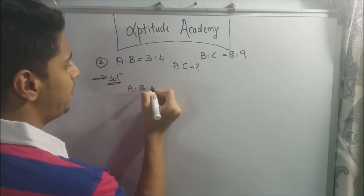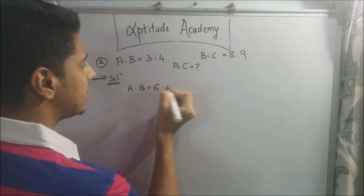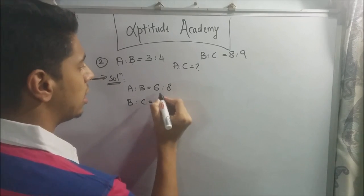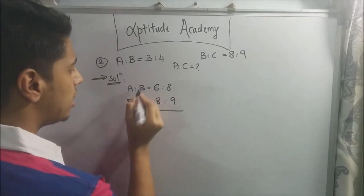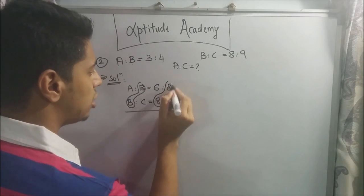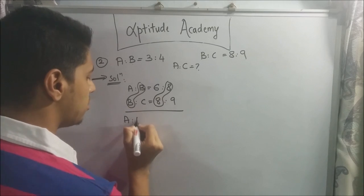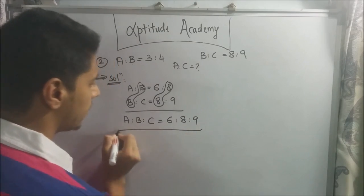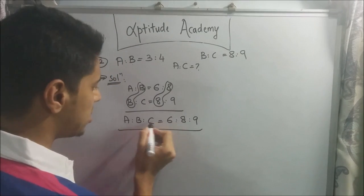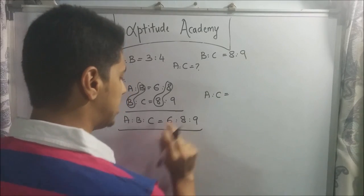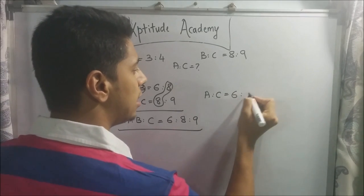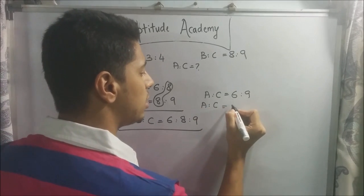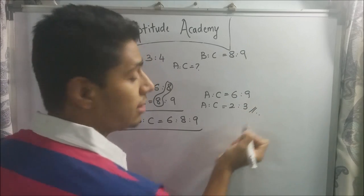So a is to b, I'll keep that same. 3 into 2 is 6, 4 into 2 is 8. And I'll write this one just as it is. You don't need to multiply this at all. 8 is to 9, right? So now b is common, 8 is common. So a is to b is to c is equal to 6 is to 8 is to 9, right? Now they've asked you what is a is to c. So a is to c is this one. a is to c is equal to 6 is to 9. Now this is not the most simplified because you can divide it by 3. So you can write a is to c is equal to 2 is to 3. This is your final answer.